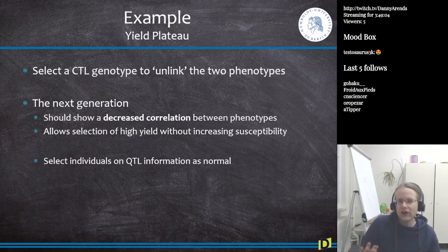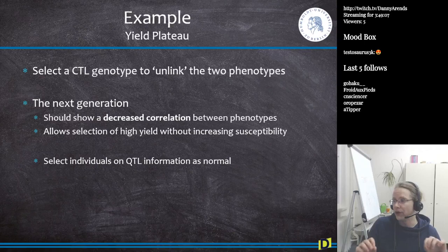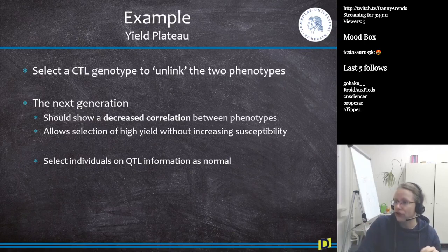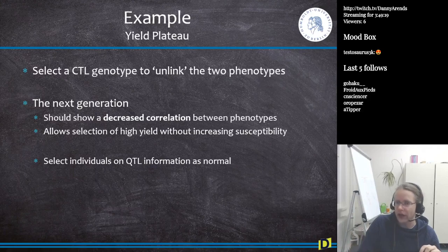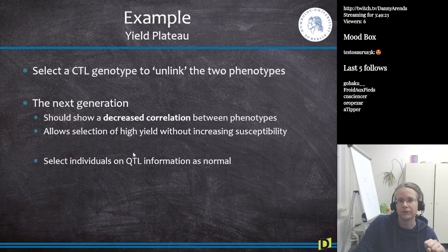In this case we have a positive phenotype linked with a negative phenotype. We can also have a negative phenotype linked with a negative one, and then you'd probably want to show the lower tail. So select the CTL genotype to unlink two phenotypes. In the next generation we should see a decrease in correlation between the phenotypes, and this allows — again in the next generation — to select for high yield without increasing the susceptibility. Then in the next generation you just select individuals based on QTL information like you would normally do.